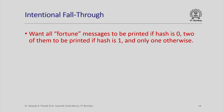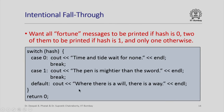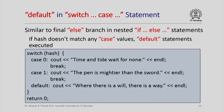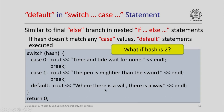Fall-through can also be used intentionally. For example, if we want all three fortune messages printed when hash is 0, two messages when hash is 1, and one when hash is 2, we simply remove the break statements before case 1 and case 2. Then if hash is 0 all three messages print due to fall-through; if hash is 1 two messages print; and for hash equal to 2 the default statement executes.